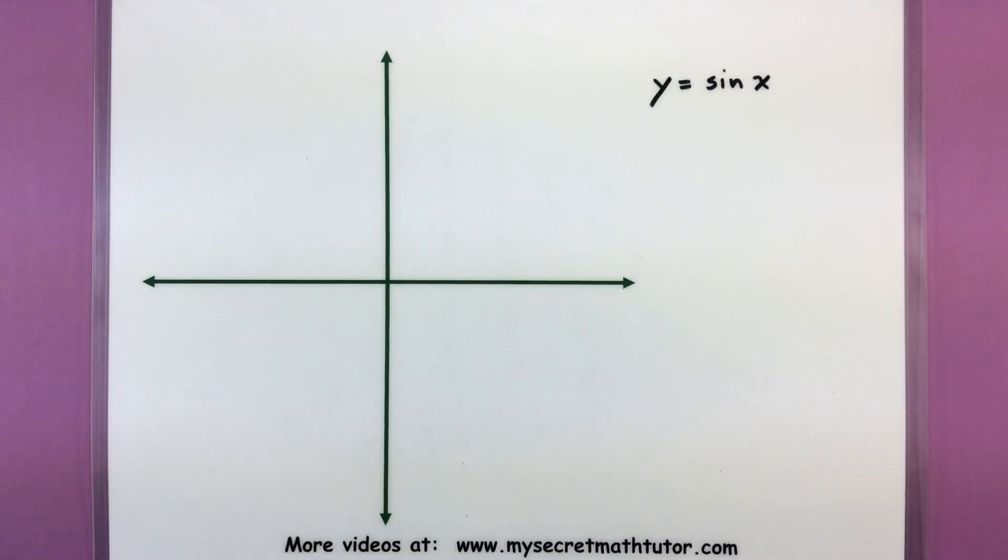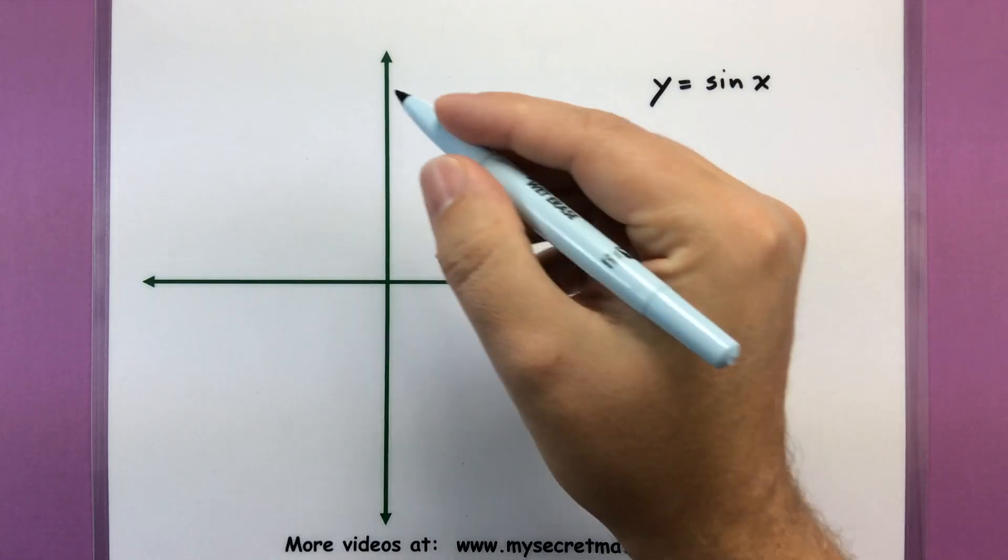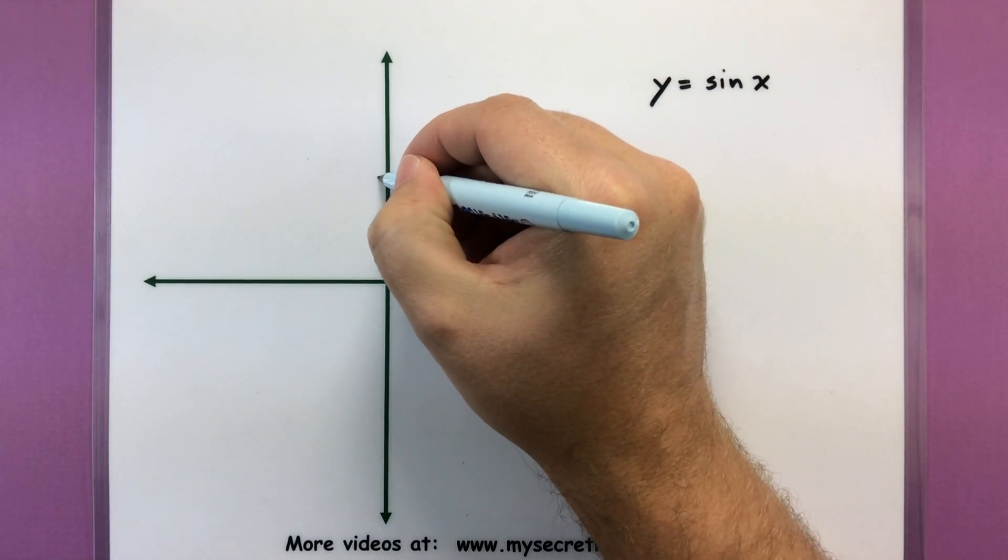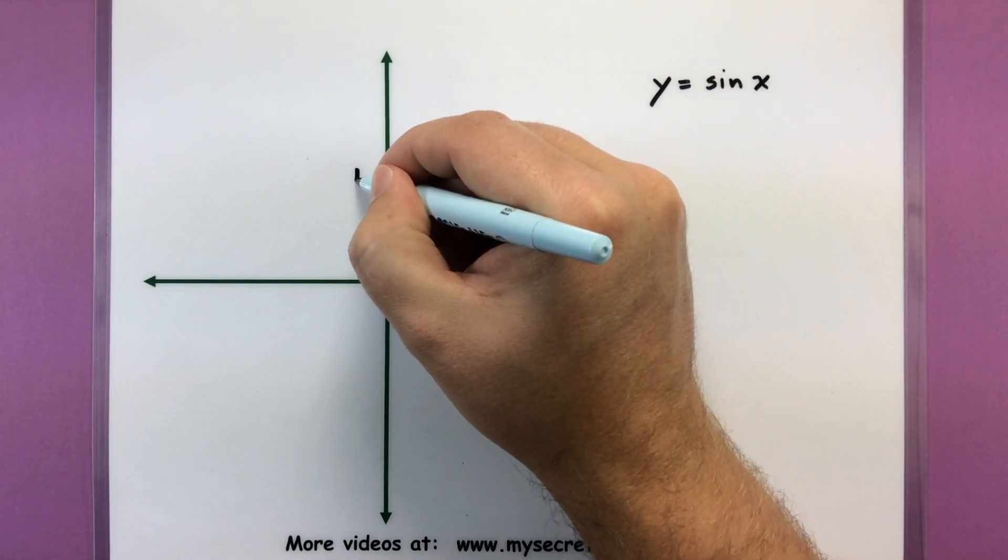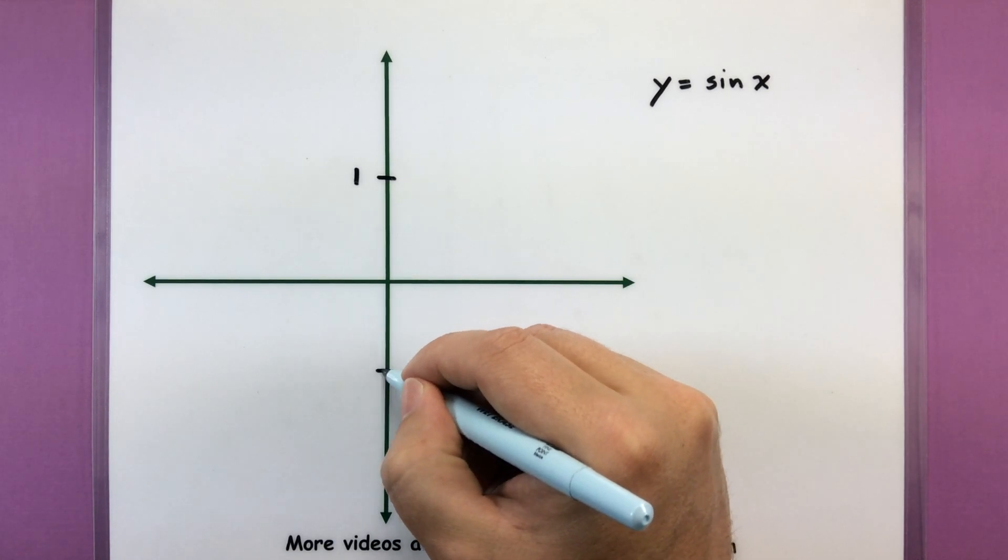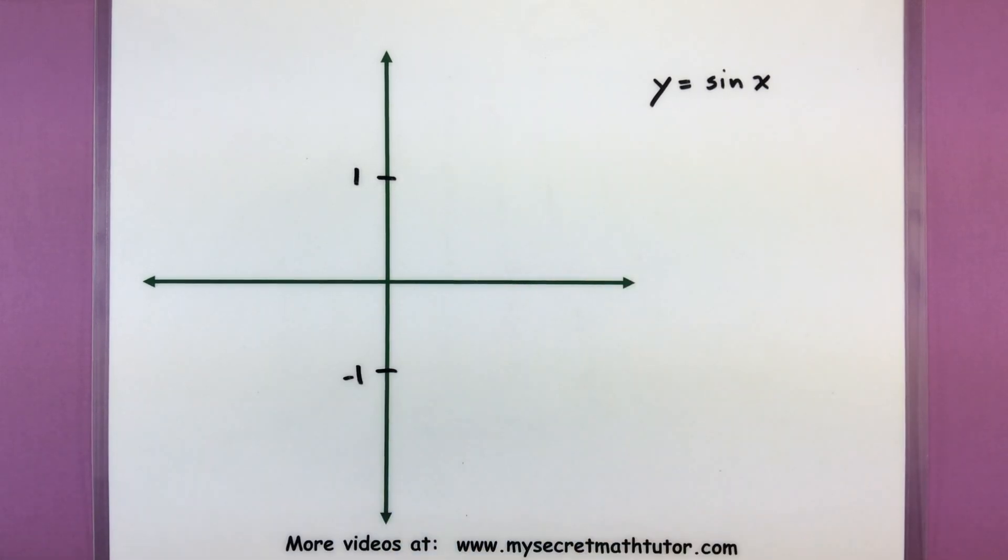When I go to build just a basic graph of sine, there's a few key points I put on there to help me get the big picture. The first two key points I like to put down is where it takes on its maximum value and its minimum value. So the highest point on sine is at 1, and the lowest point on sine is at negative 1.